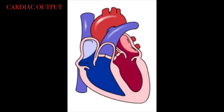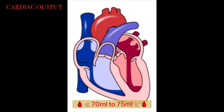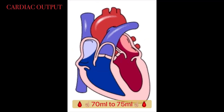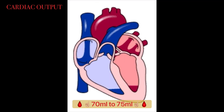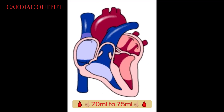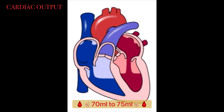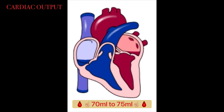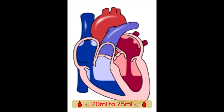However, the amount of blood within the left and right ventricles is almost equal — approximately 70 to 75 ml.